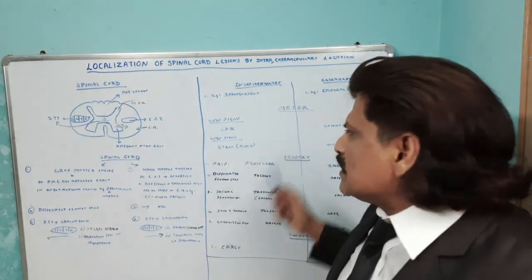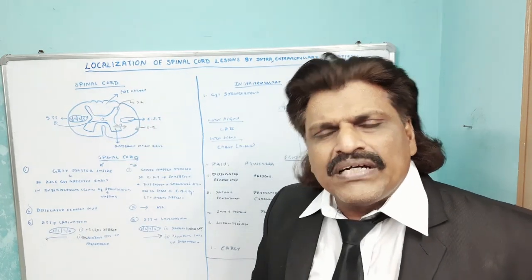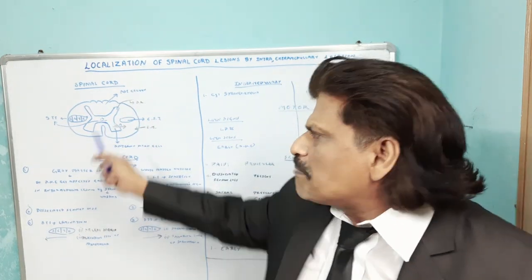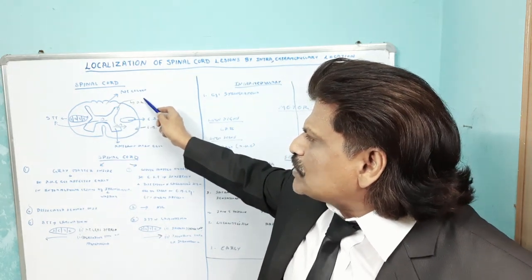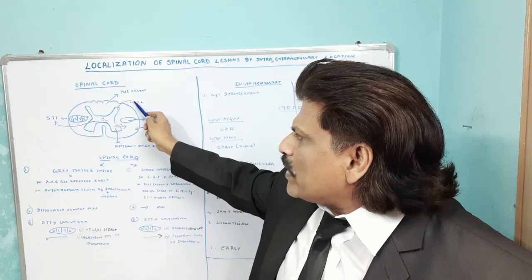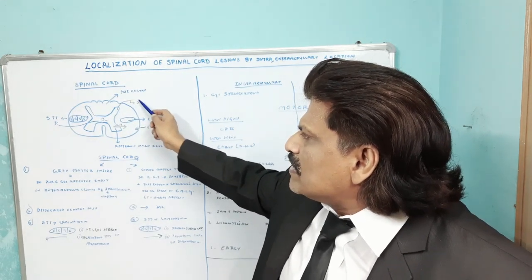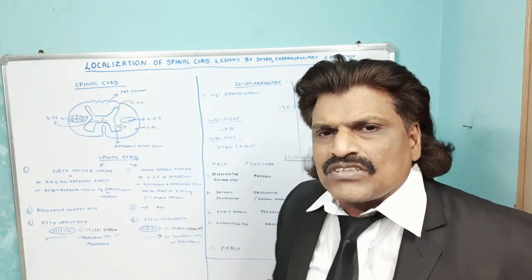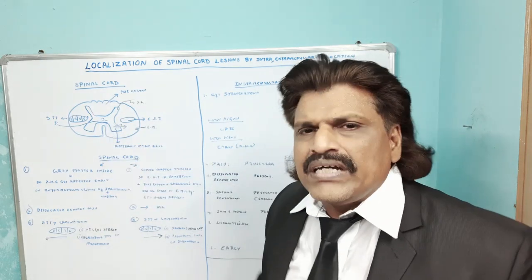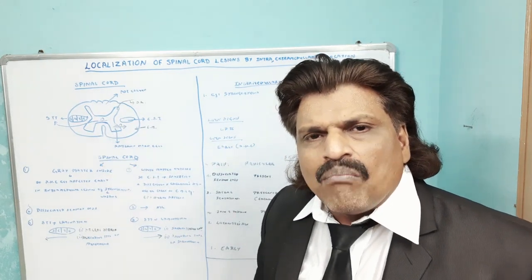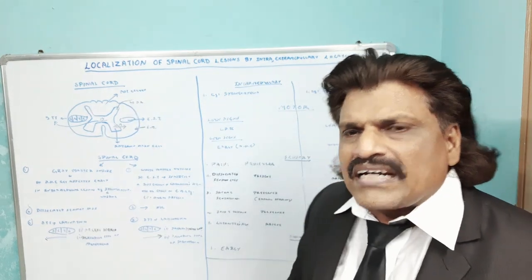Now regarding sensory disturbances: in intramedullary lesions there is a funicular type of pain — a dull, boring type of pain. Whereas in extramedullary lesions, since the posterior roots enter via the dorsal horn and enter the posterior gray column, the dorsal roots get affected, producing a radicular type of pain. So intramedullary lesion gives funicular, dull boring pain; extramedullary lesion gives radicular pain.